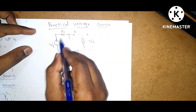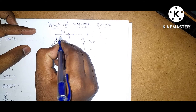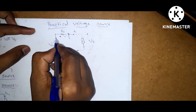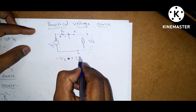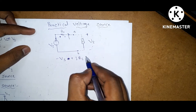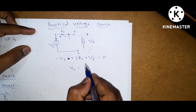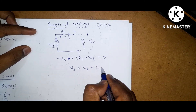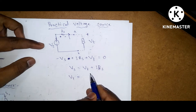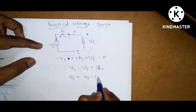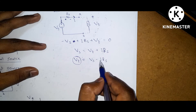Next is the practical voltage source. In a practical voltage source there is an internal resistance connected in series with the voltage source. Applying KVL, the drop across the resistor is positive and current leaves at the positive terminal of the source. So: minus Vs plus IRS plus Vt equals zero. From this, terminal voltage Vt equals Vs minus IRS.